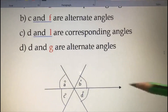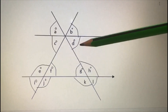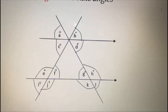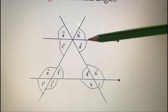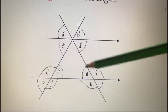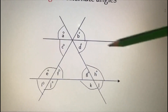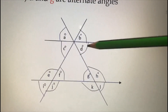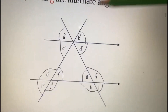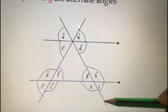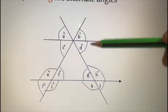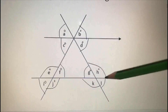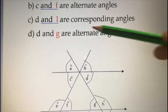The next question: which angle is corresponding to D? Corresponding angles — think about F. Angle D is here, so draw F from this position only, not the full angle but just this part. Drawing F like this, the corresponding angle to D is L. So D and L are corresponding angles.